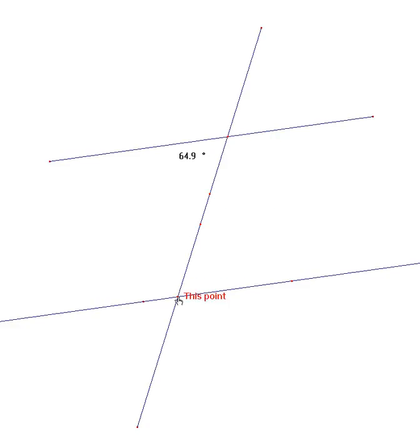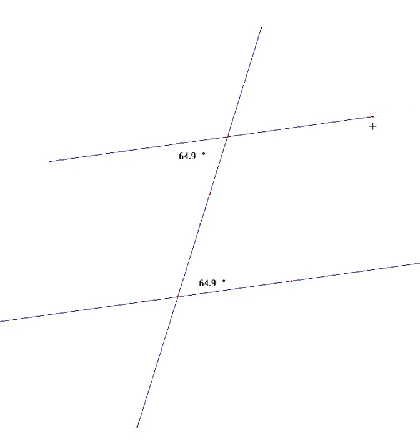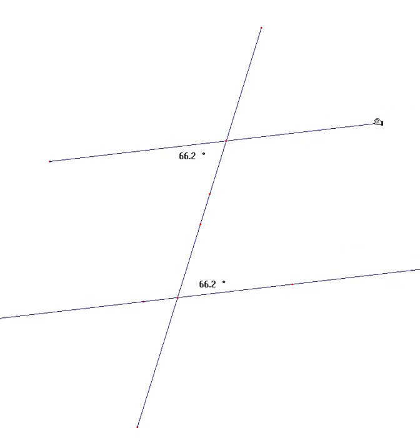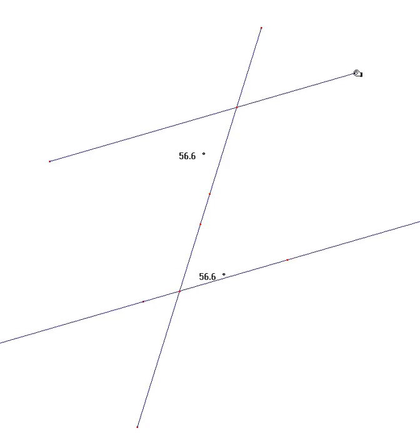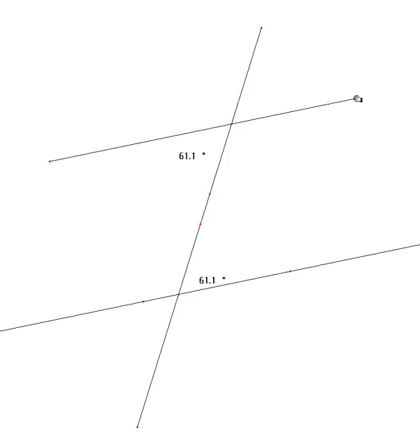Two angles will be measured. The two angles are identical and are called alternate angles. No matter how the diagram is adjusted, the alternate angles remain equal.